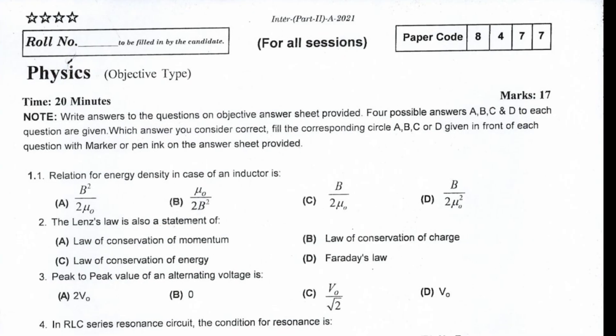Relation for energy density in case of an inductor is B squared by 2 mu naught. The lens law is also a statement of law of conservation of energy.